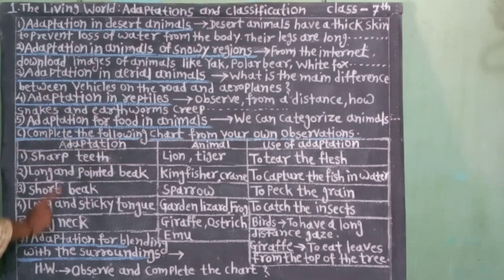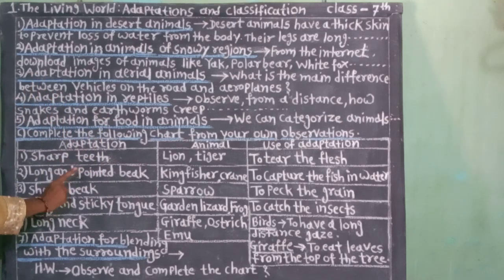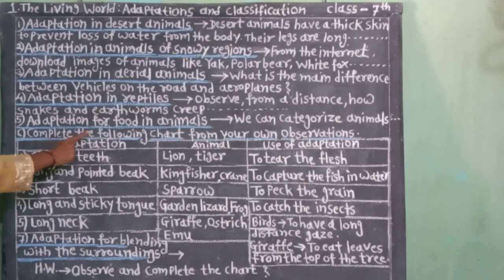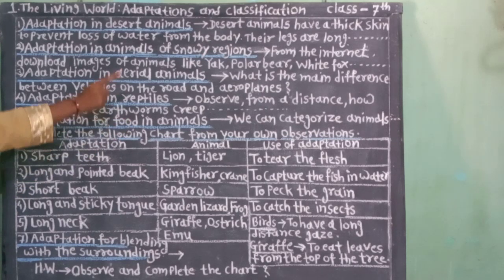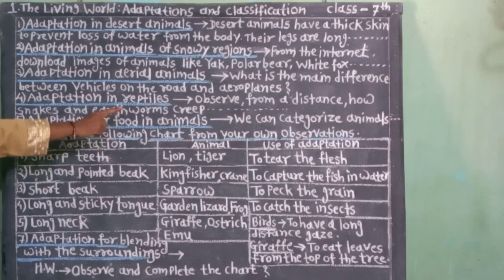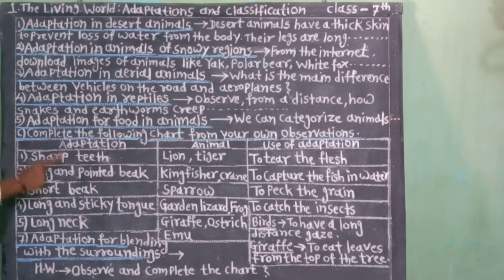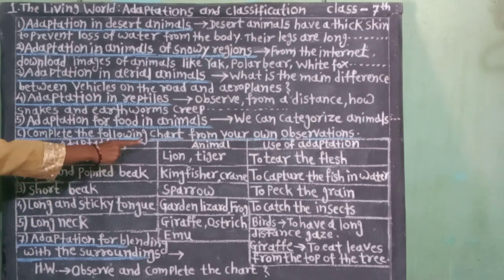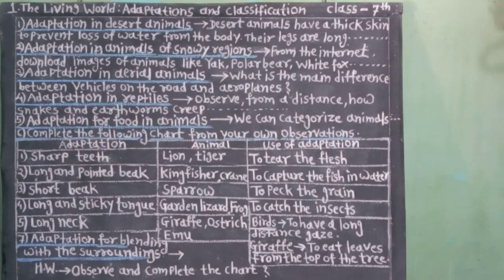Okay students, do you understand? Then your next activity: complete the following chart from your own observations. Look at the chart. The columns are: Adaptation, Animal, and Use of Adaptation.